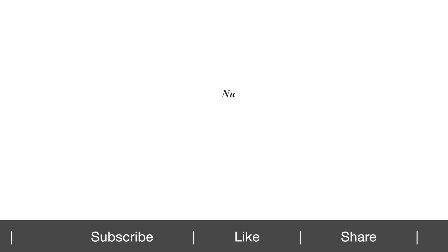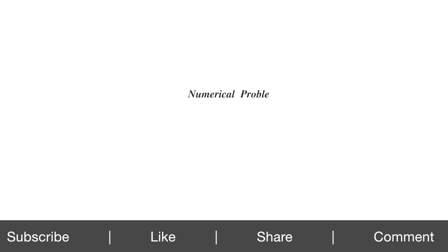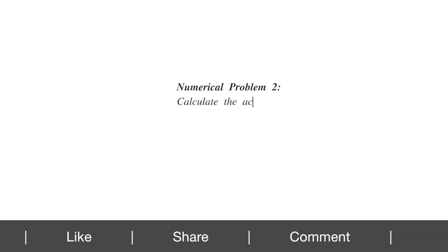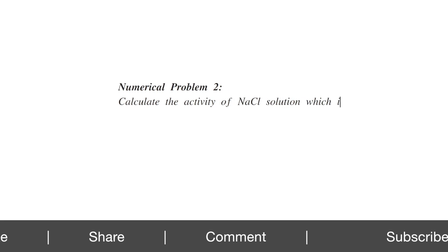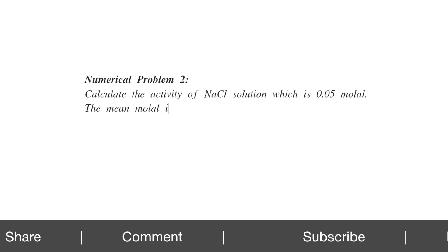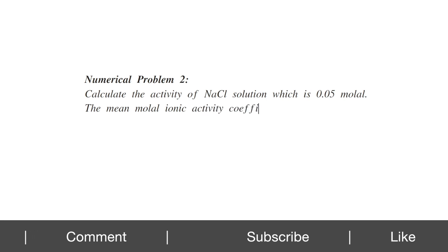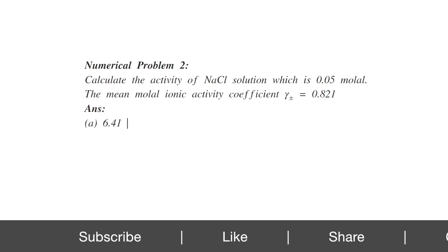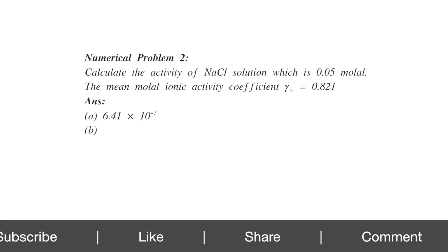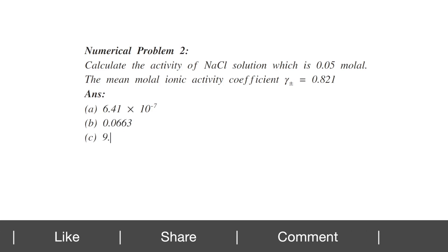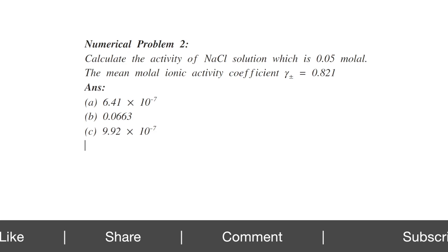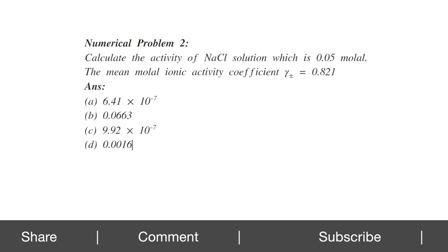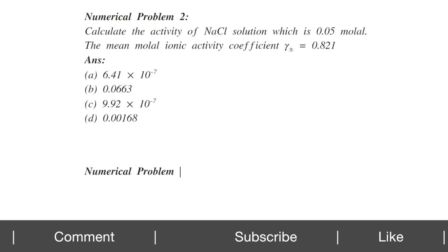There are more numerical problems for your practice. Example: Calculate the activity of a sodium chloride solution that is 0.05 molal, with mean molal ionic activity coefficient 0.821. Possible answers: A) 6.41×10⁻⁷, B) 0.0663, C) 9.92×10⁻⁷, D) 0.00168. Please write the correct answer in the comment box below.